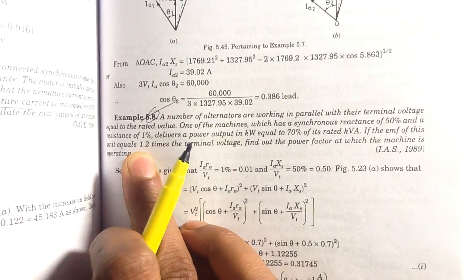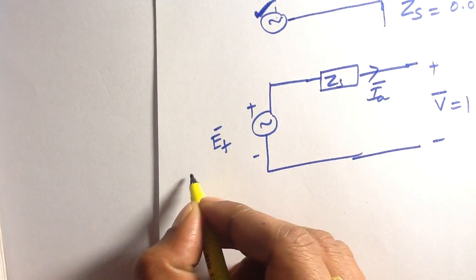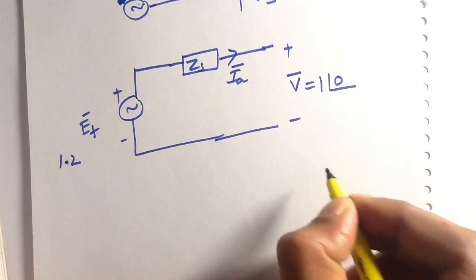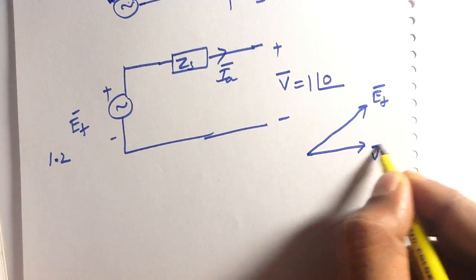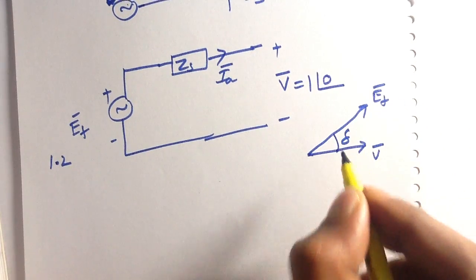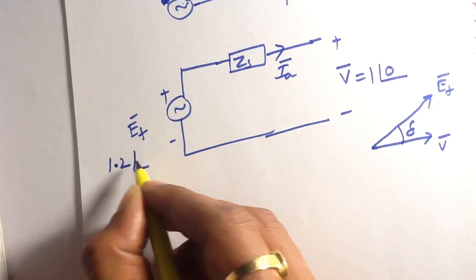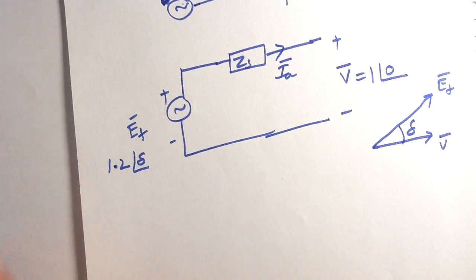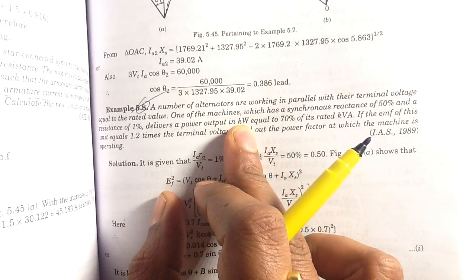It is also given that the EMF of the alternator equals 1.2 times the terminal voltage, so the magnitude of the internal EMF is 1.2. In the case of an alternator, the EMF always leads the terminal voltage by an angle delta, known as the load angle. So in polar form, E_F = 1.2∠δ.